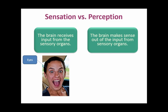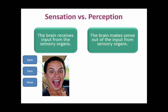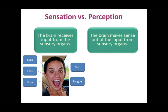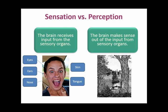Under sensation, we have information coming in from the eyes, the ears, the nose, the tongue, and your skin. In this part of the chapter, we're literally going to be talking about how those receptors work. In perception, we're going to talk about how your brain actually makes sense of the information coming in through your eyes.